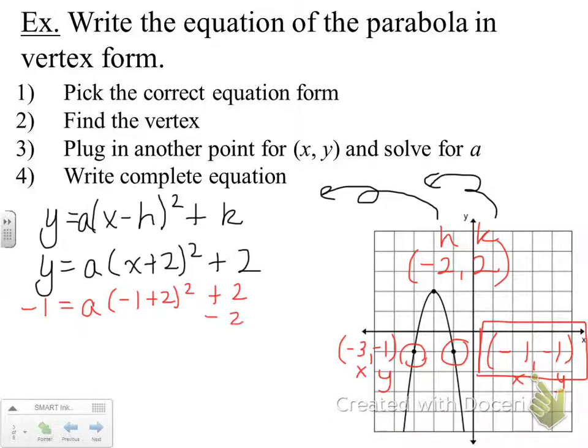So first, I like to subtract that 2. We get negative 3 equals a times, and I'm going to simplify in my parentheses, negative 1 plus 2 is 1, and I'm going to square that. So I'm going to get negative 3 equals 1a, which means my a value is just negative 3.